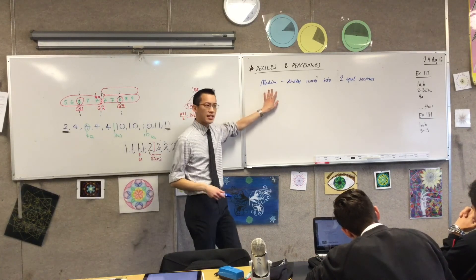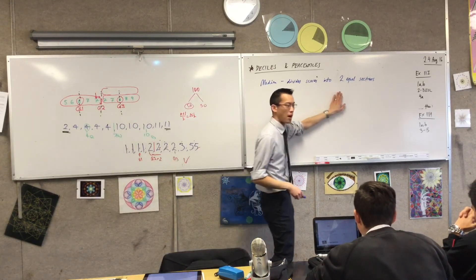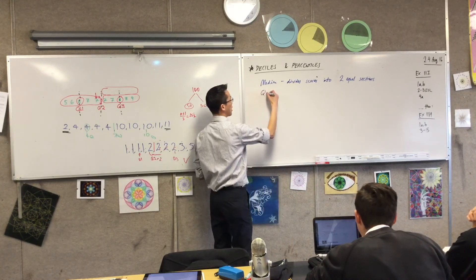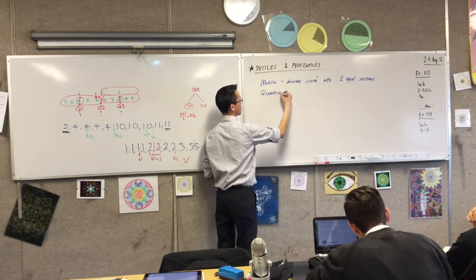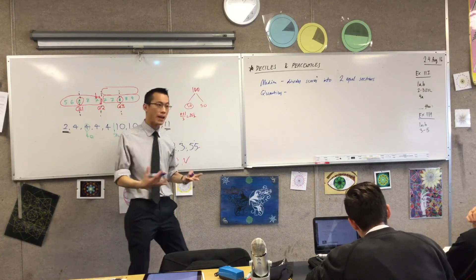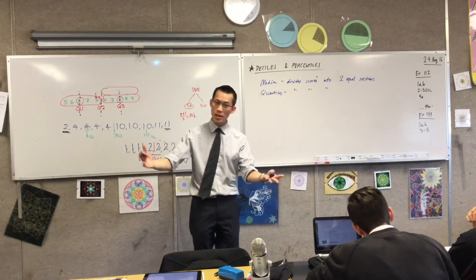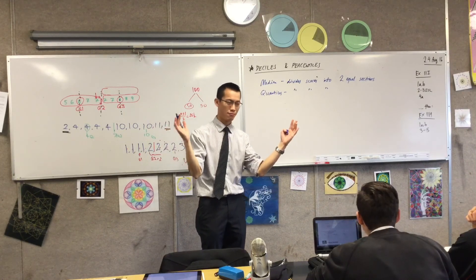And then we extended that. We said, well, okay, if you look at the bottom half and you look at the second half, and you do this again, you get quartiles. So these are exactly the same in terms of dividing scores, but instead of two equal sections, you get four.